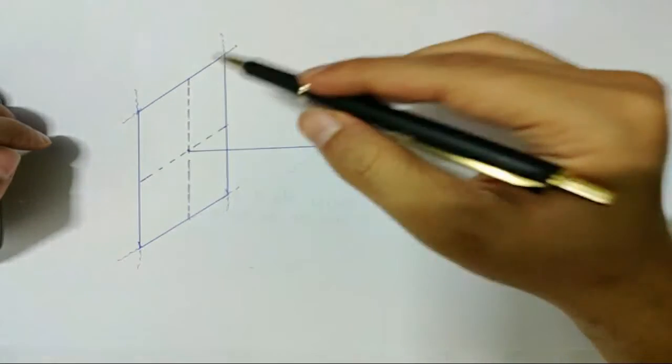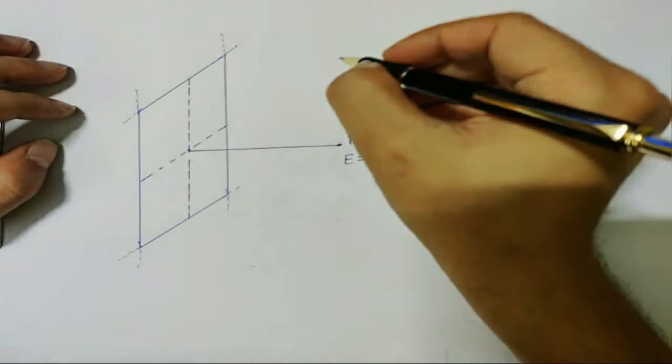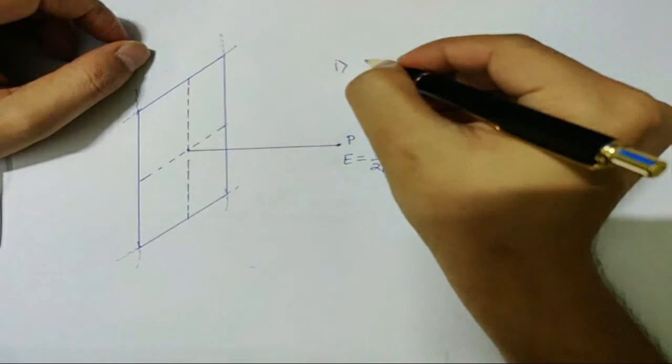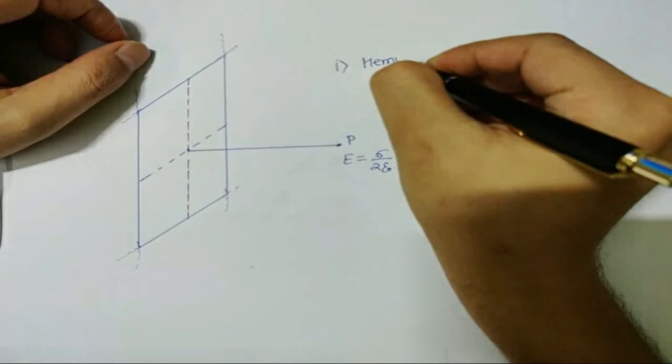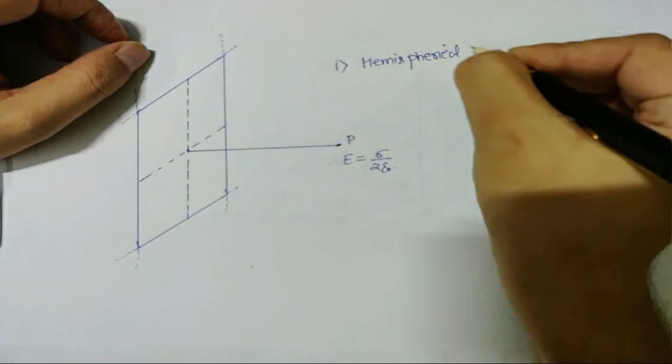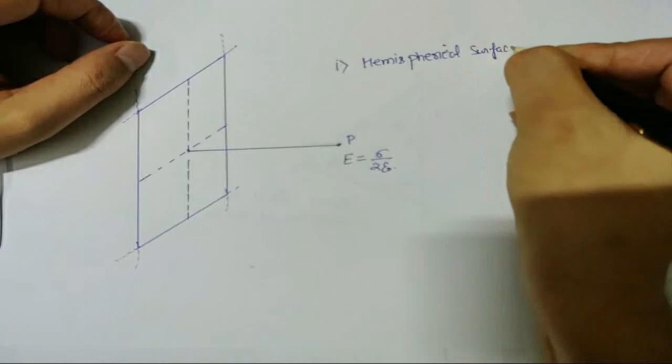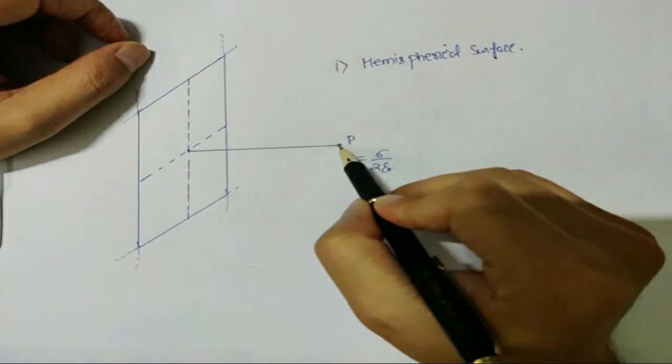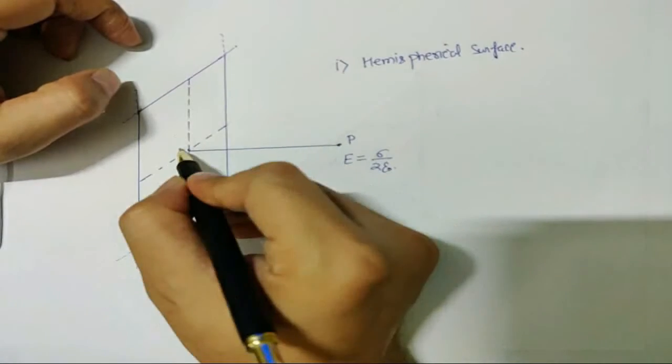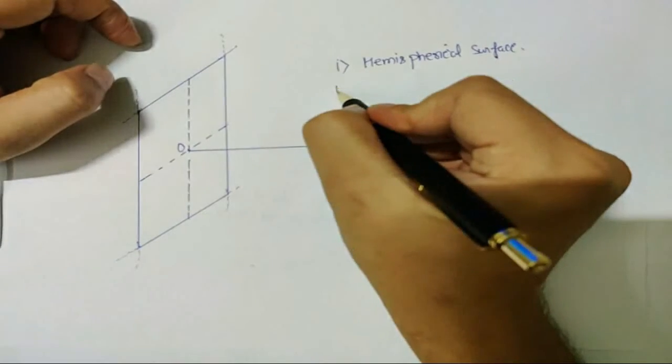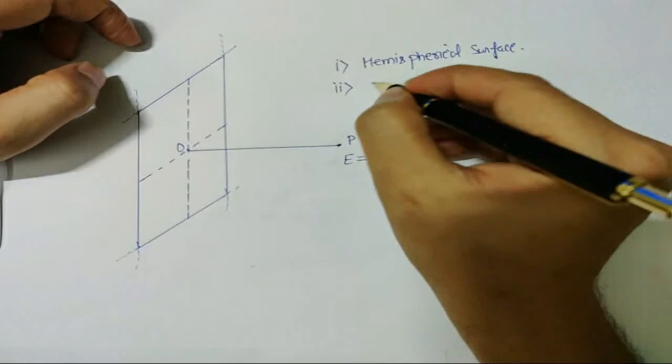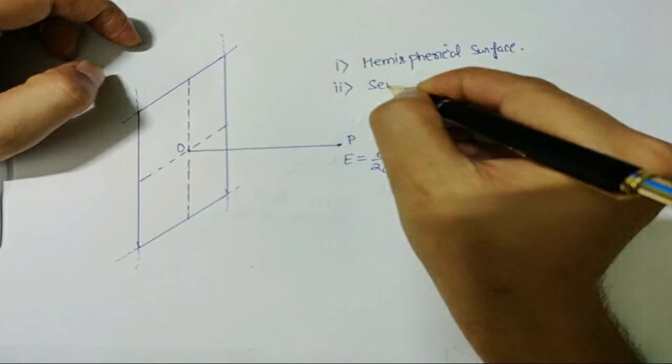So I have two options. First one is I can take a hemispherical surface, a hemispherical surface which is centered at P and whose radius is from P to this particular point, let's call it O.